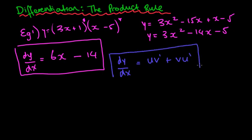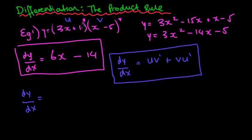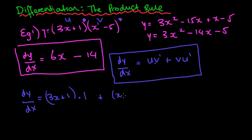That looks very strange, but what it actually does is treat the two terms being multiplied together as two different letters u and v. So for our example, u could be (3x + 1) and v could be (x − 5). So dy/dx equals u, which is 3x + 1, multiplied by v', which means we differentiate the second term (x − 5), giving us 1 — because x to the power 1 differentiates to x to the power 0, which is just 1.